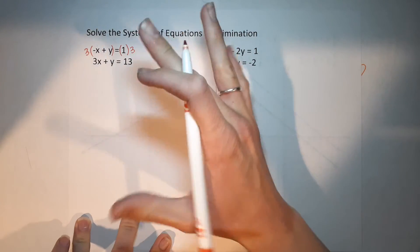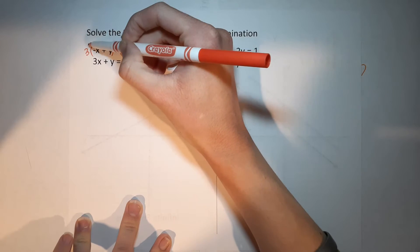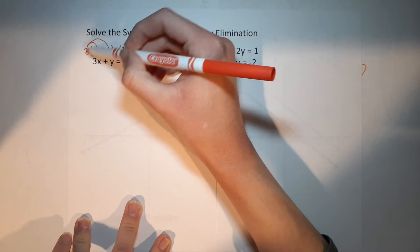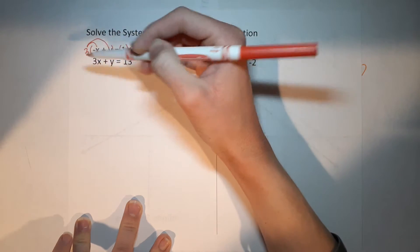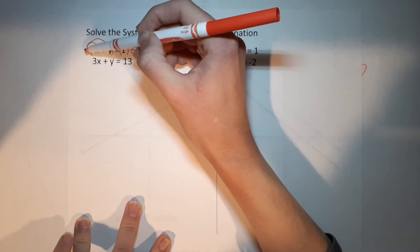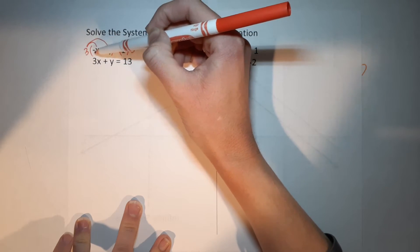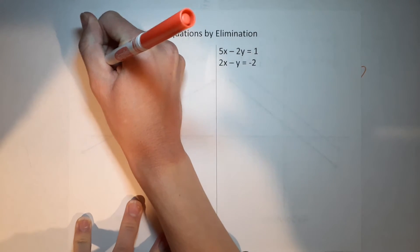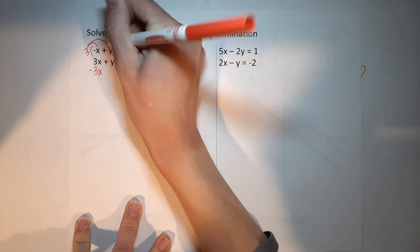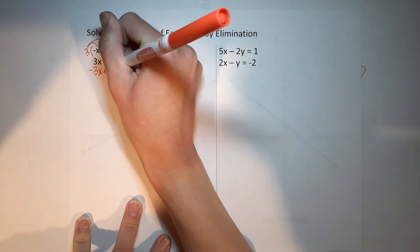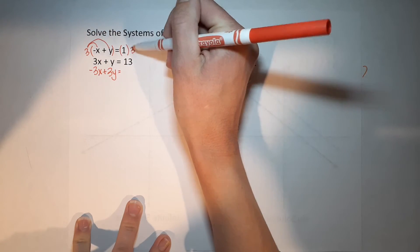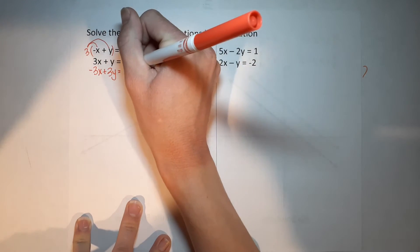Multiplying both sides by three, I need to make sure I distribute — the three is being multiplied to both terms. Three times negative x gives me negative 3x. Three times y gives me plus 3y. And then three times one is three on the right side.